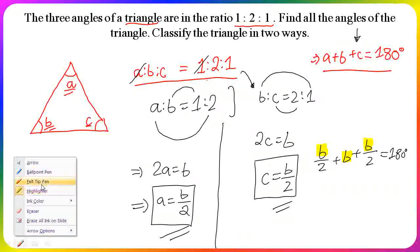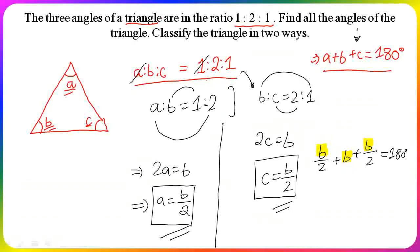I am going to multiply the second term B by 2/2. We get B/2 + 2B/2 + B/2 = 180 degrees.